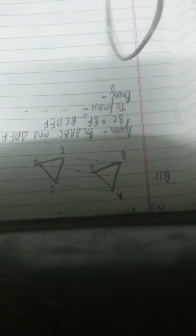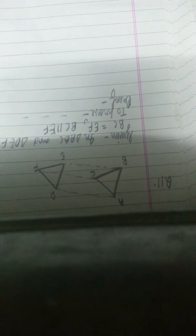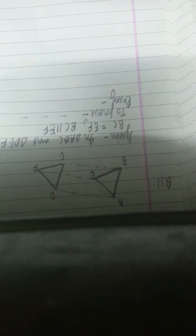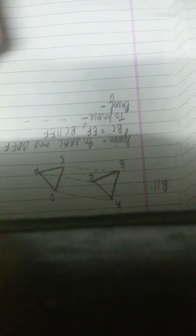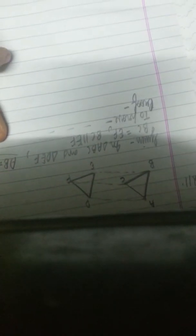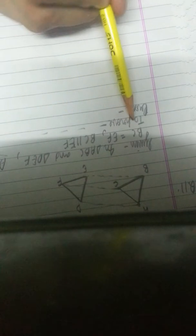Question number 11. In question number 11, we are given that in triangle ABC and DEF, AB is equal to DE and AB is parallel to DE. We are also given that BC is equal to EF and BC is parallel to EF.